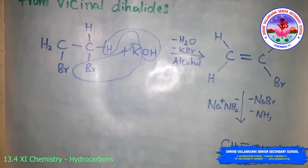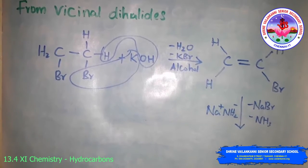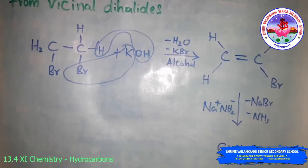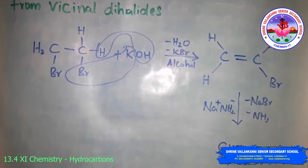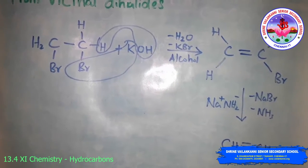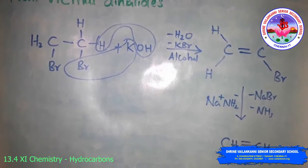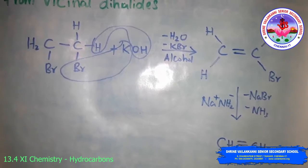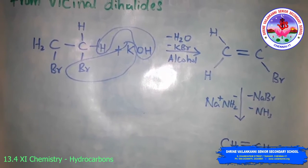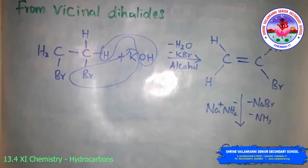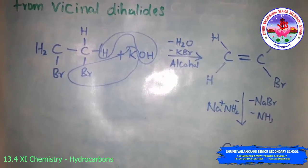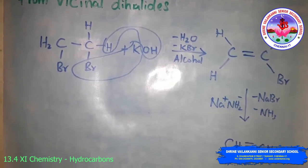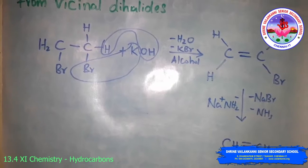Physical properties: alkynes follow the same trends as alkenes and alkanes. The first three members are gases, the next eight are liquids, and the higher ones are solids. All alkynes are colorless. Ethyne has a characteristic odor while other members are odorless. The alkynes are weakly polar, lighter than water, and immiscible with water, but soluble in organic solvents like ether, carbon tetrachloride, benzene, and acetone. Melting point, boiling point, and density increase with increase in molar mass.